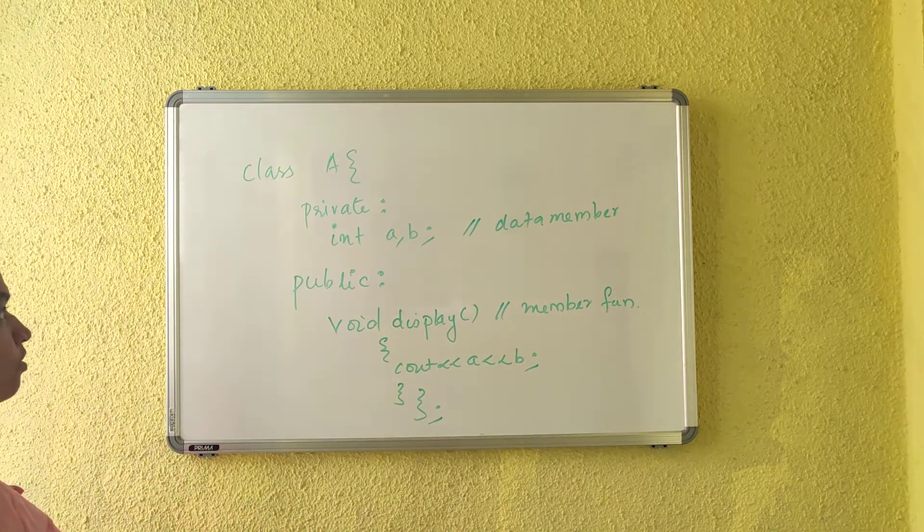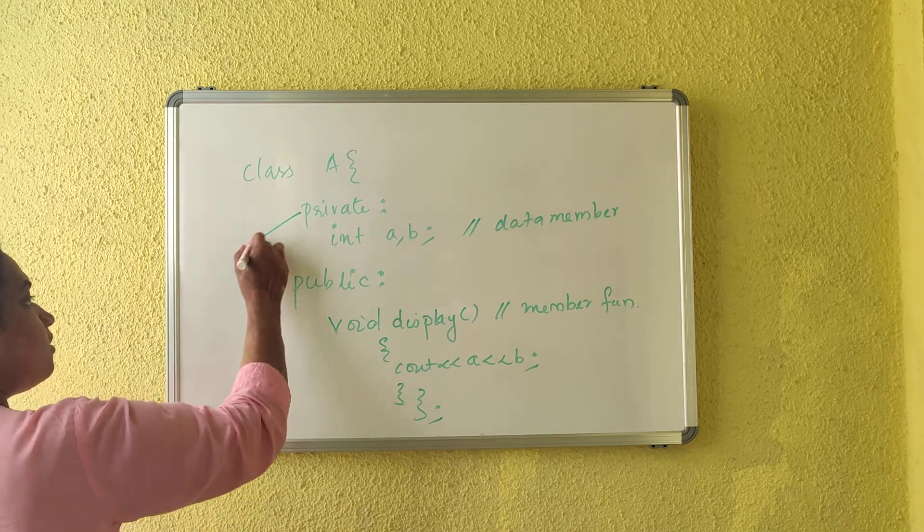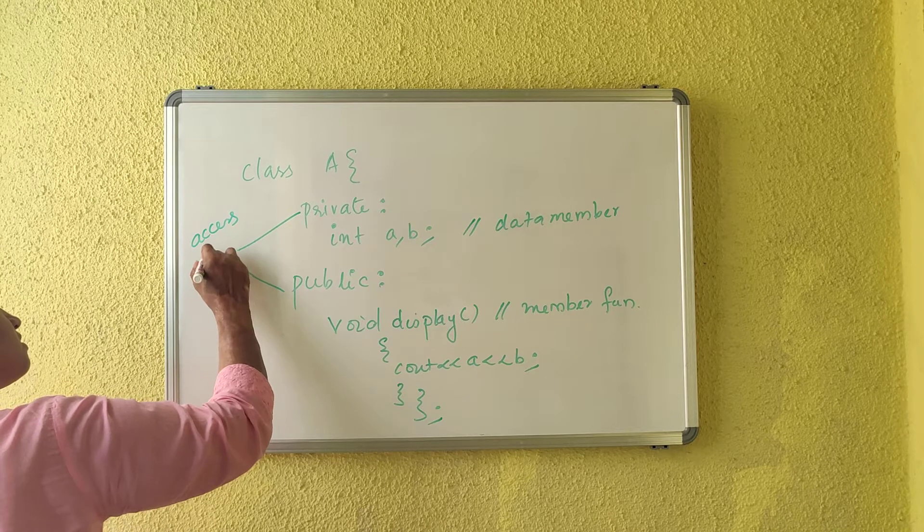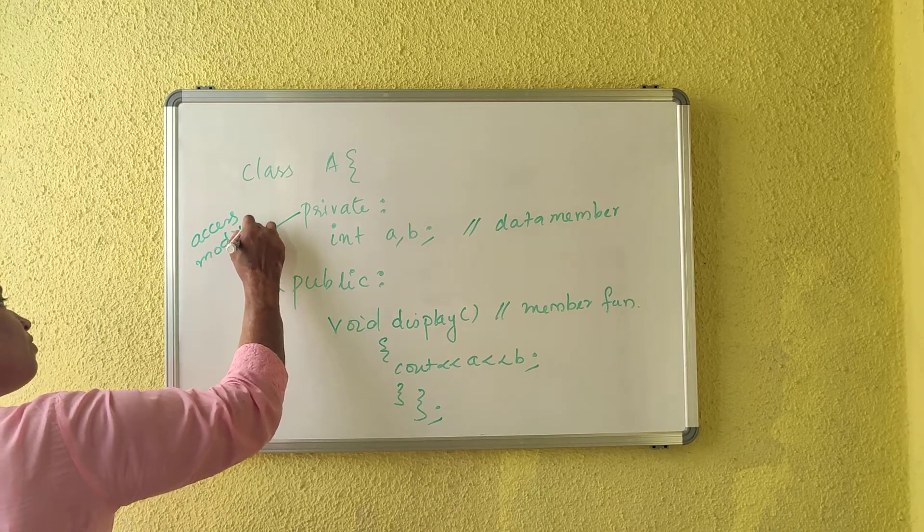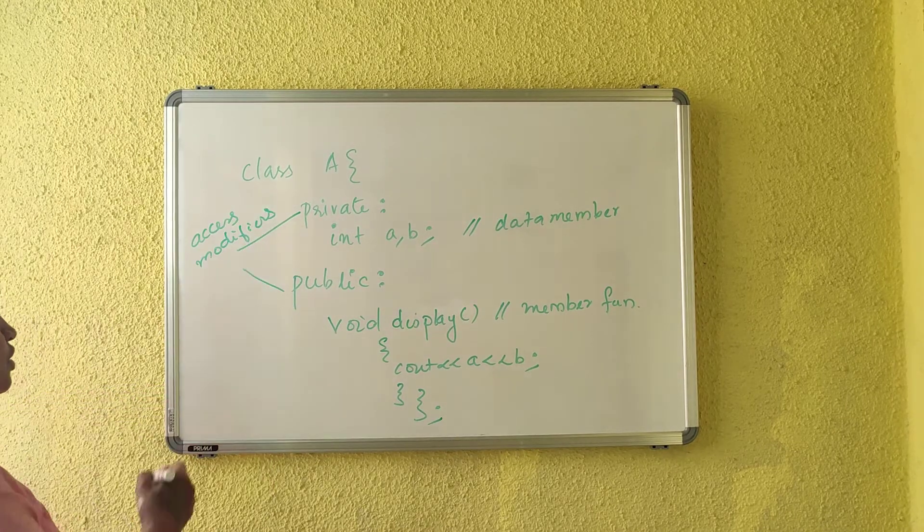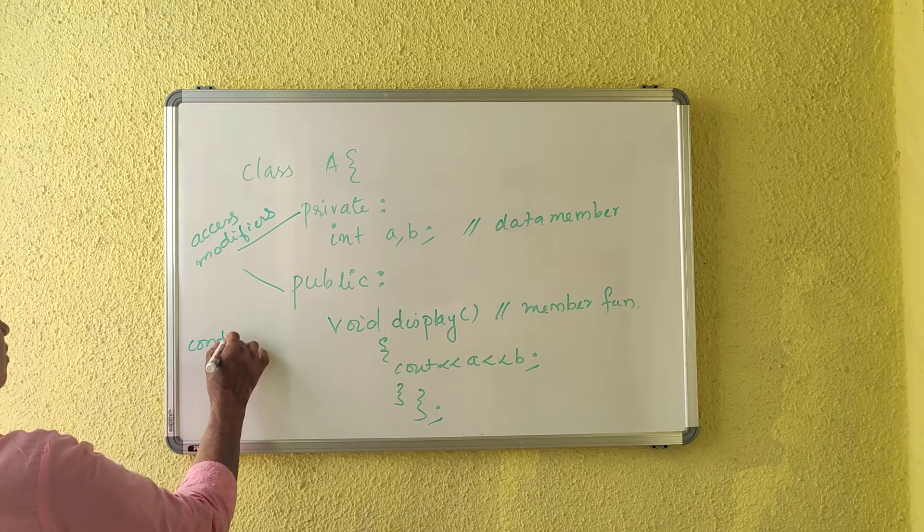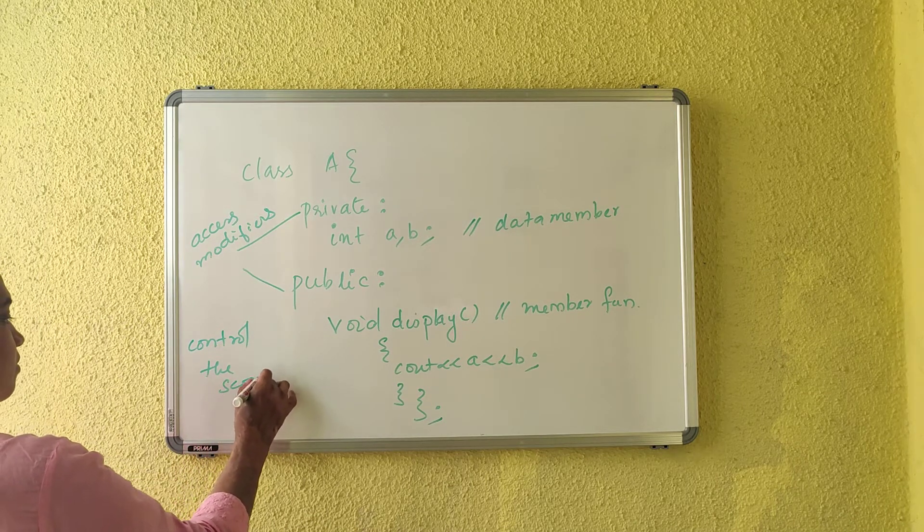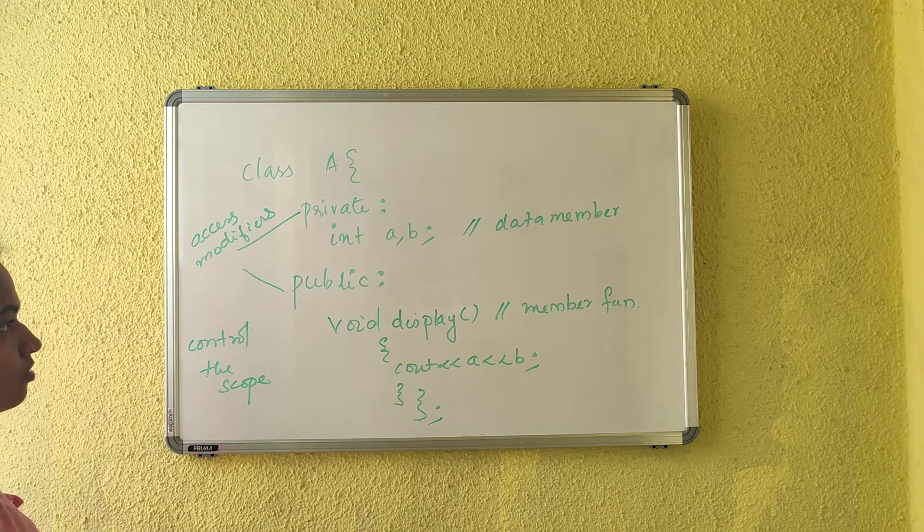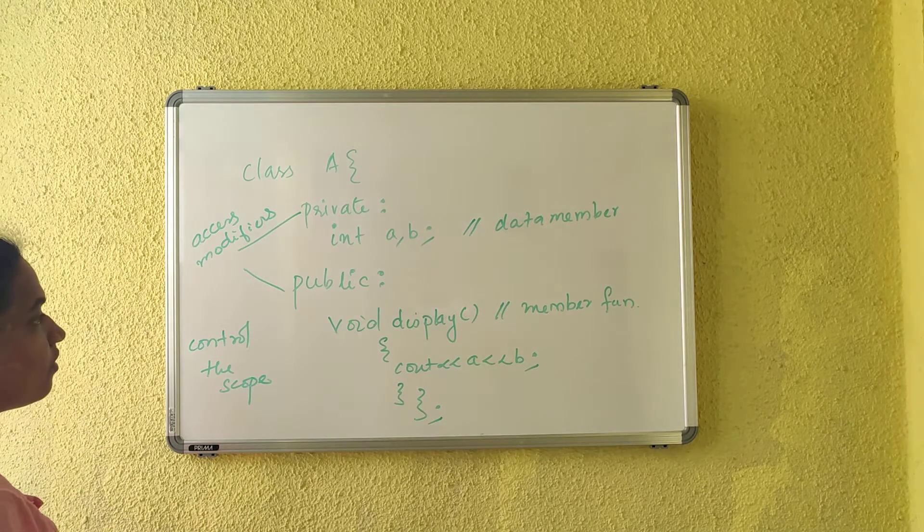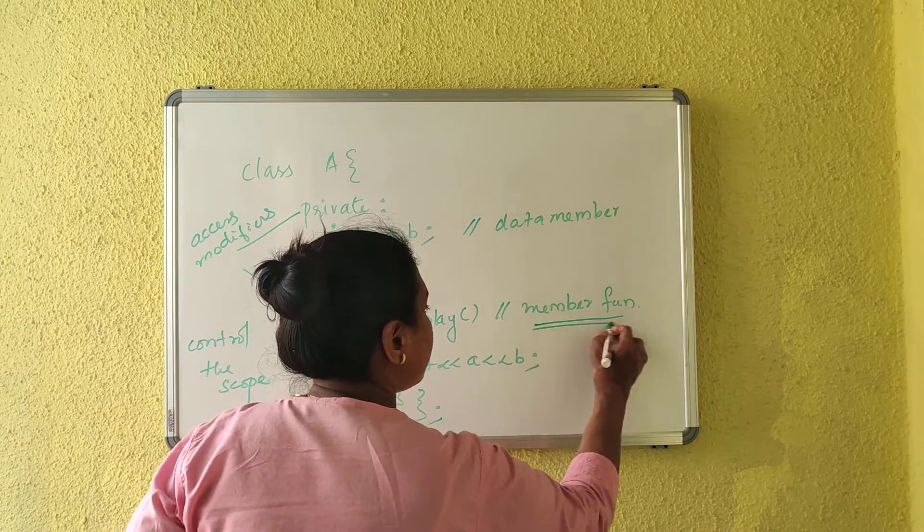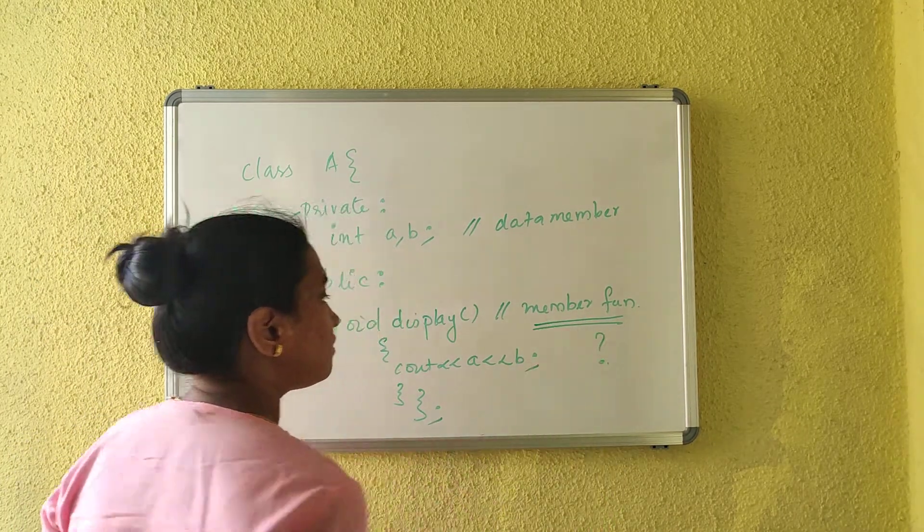Clear? So the public and private are access modifiers which control the scope. Okay. So this is an example of a class and we are going to learn how to write a member function in detail.